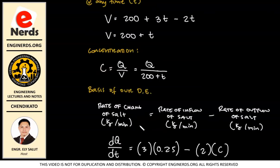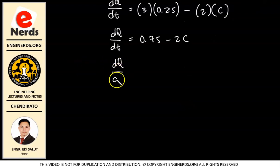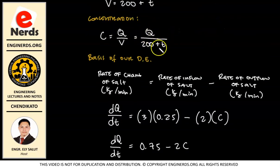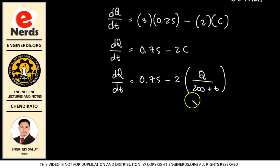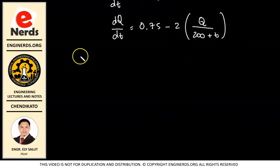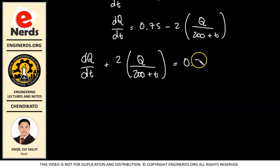We already have the equation for C, which is Q over (200 + T). Substituting that in, we get: dQ/dt = 0.75 − 2Q/(200 + T). Transposing the Q term to the left side, we have: dQ/dt + 2Q/(200 + T) = 0.75.